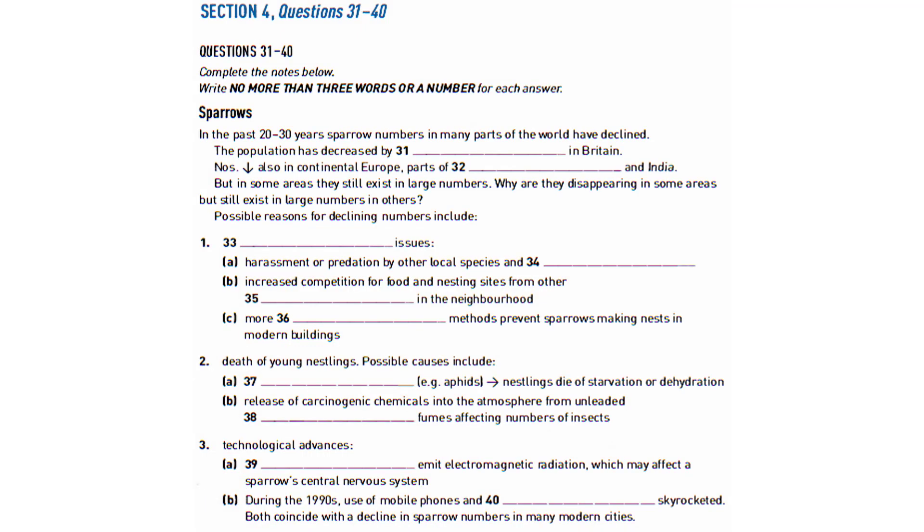Now turn to Section 4. Section 4. You will hear an expert on birds talking about sparrows, one of the most common bird species in urban and suburban environments around the world. The expert discusses some possible causes for their declining numbers. First, you will have half a minute to look at questions 31 to 40. Now listen carefully to the talk and answer questions 31 to 40.